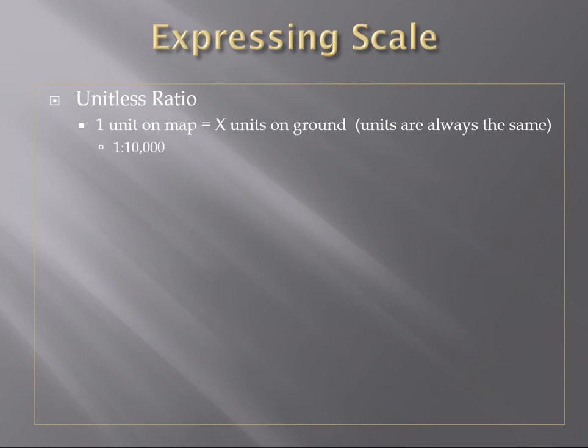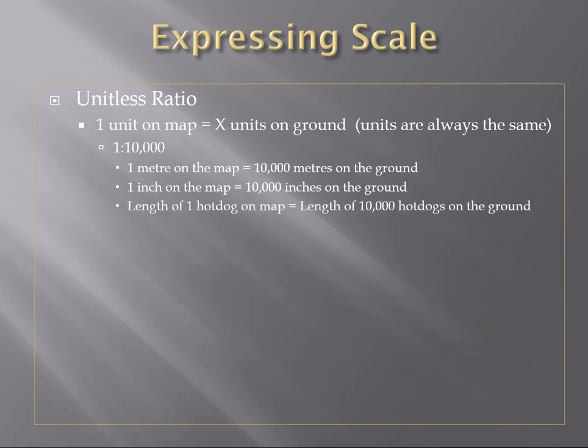So a scale of one to 10,000 means there's one centimeter or one unit on the map, and that equals 10,000 units on the ground. If I use inches, one inch on the map equals 10,000 inches on the ground. If I use one length of a hot dog on a map, it's going to be the length of 10,000 hot dogs on the ground. It doesn't matter what kind of unit you use.